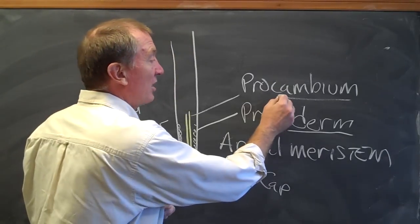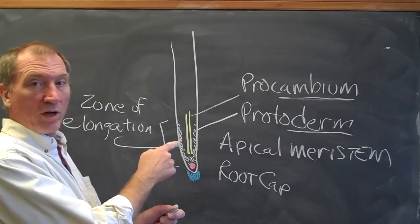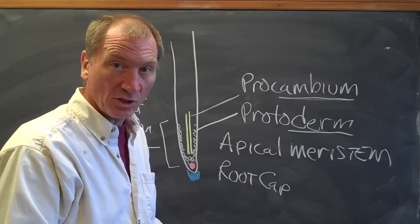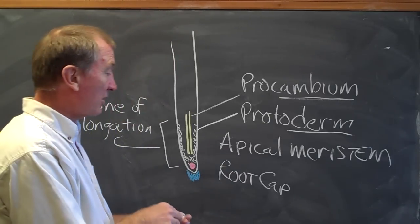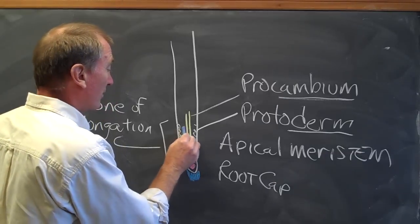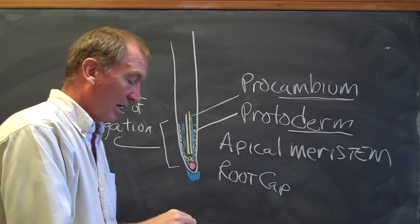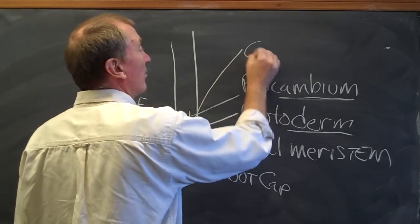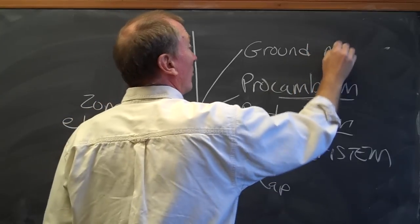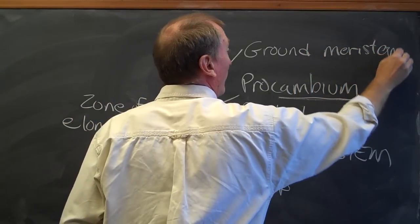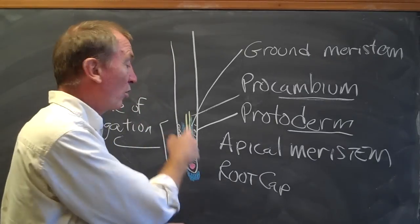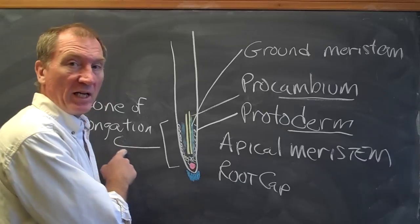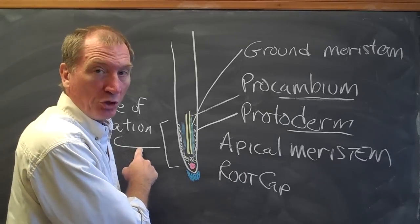So if you see the word cambium in this zone of elongation material, you know that these cells are going to become vascular tissue. And then the third type of cell in here is called ground meristem. Ground meristem, what's that? Well these are the cells that are going to become the cortex.